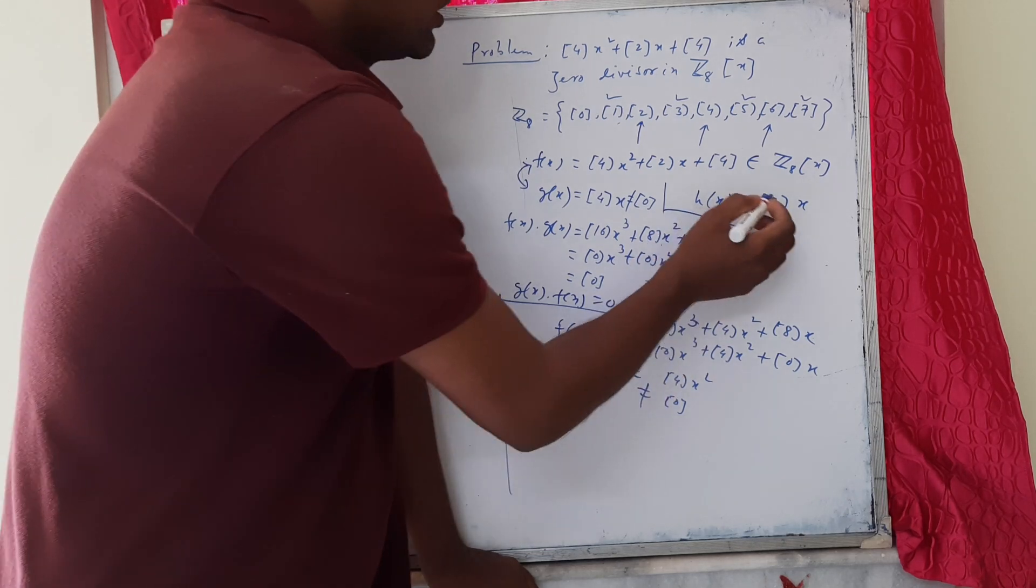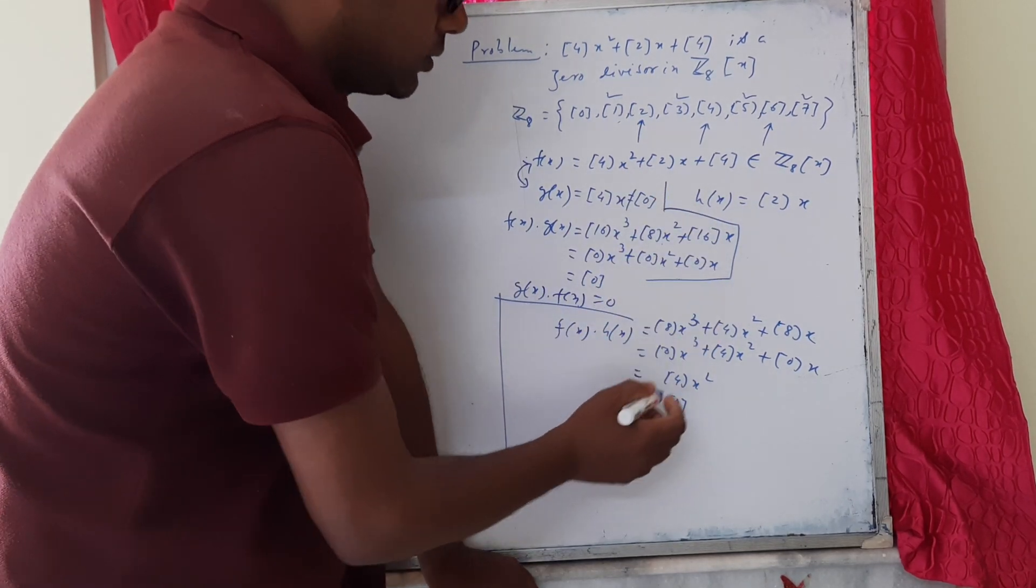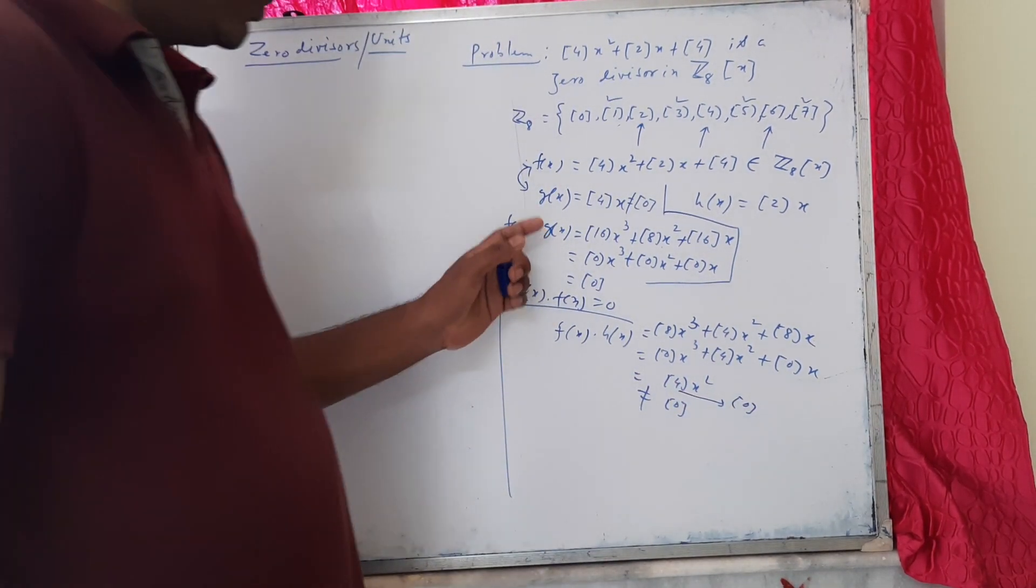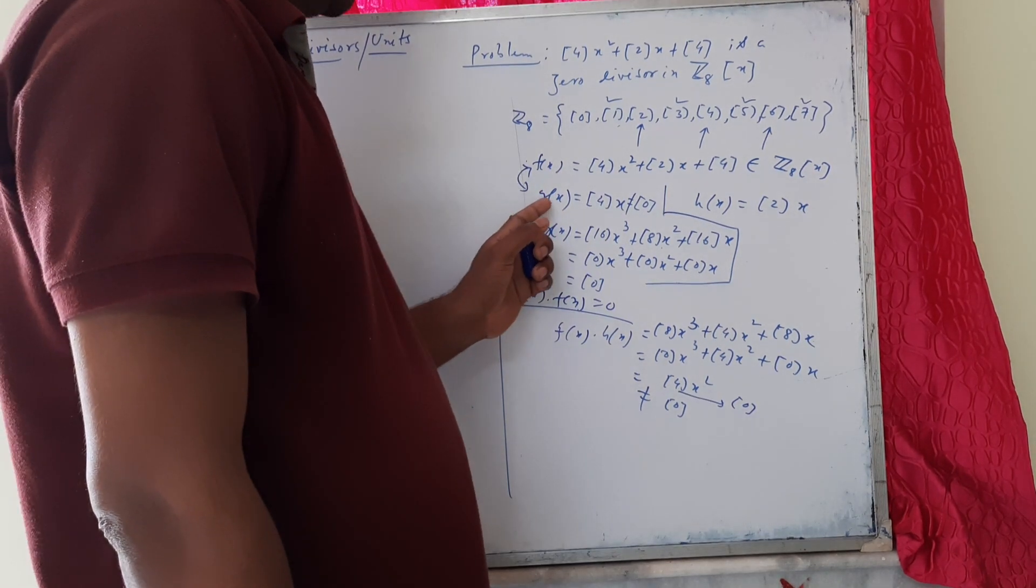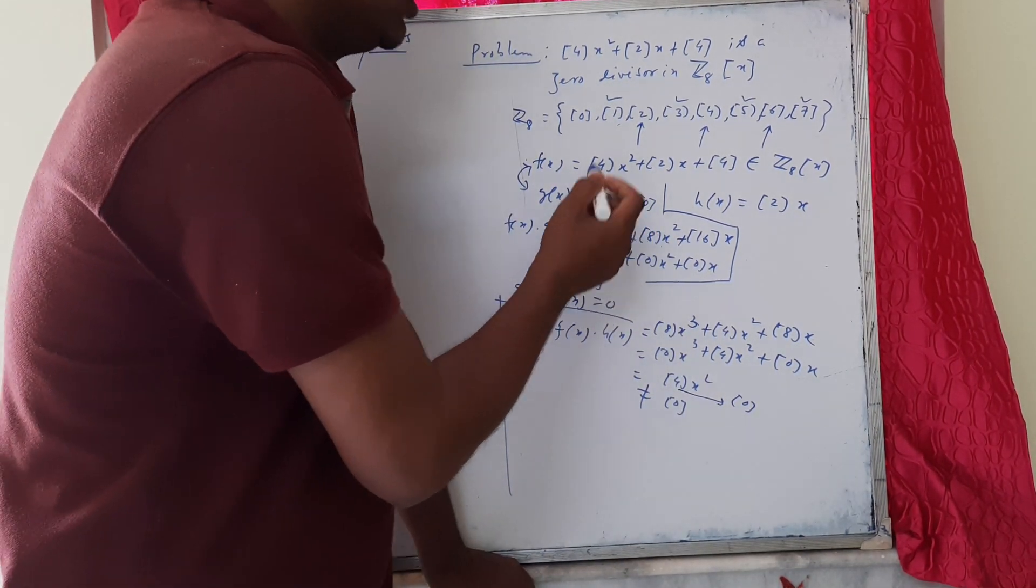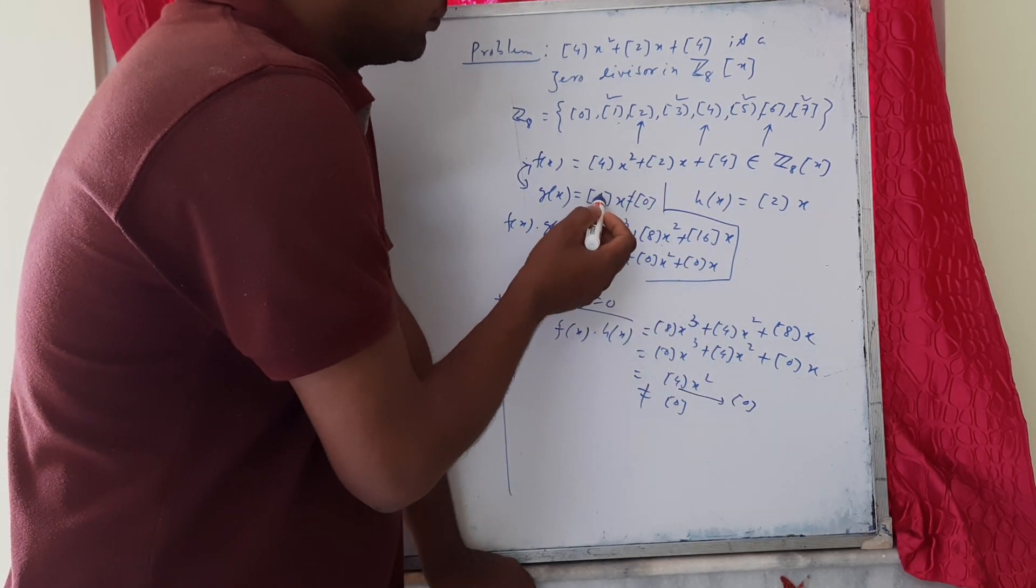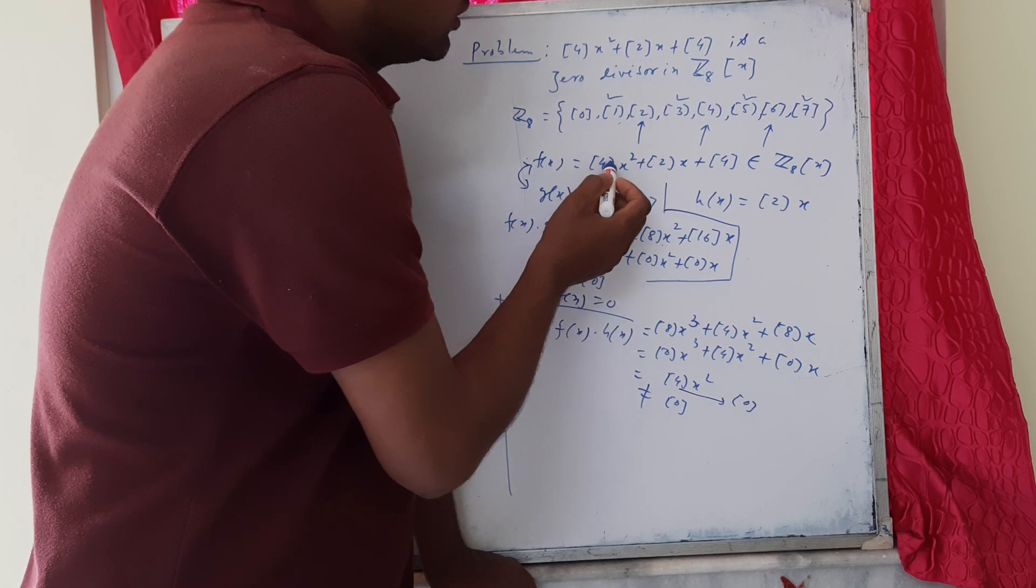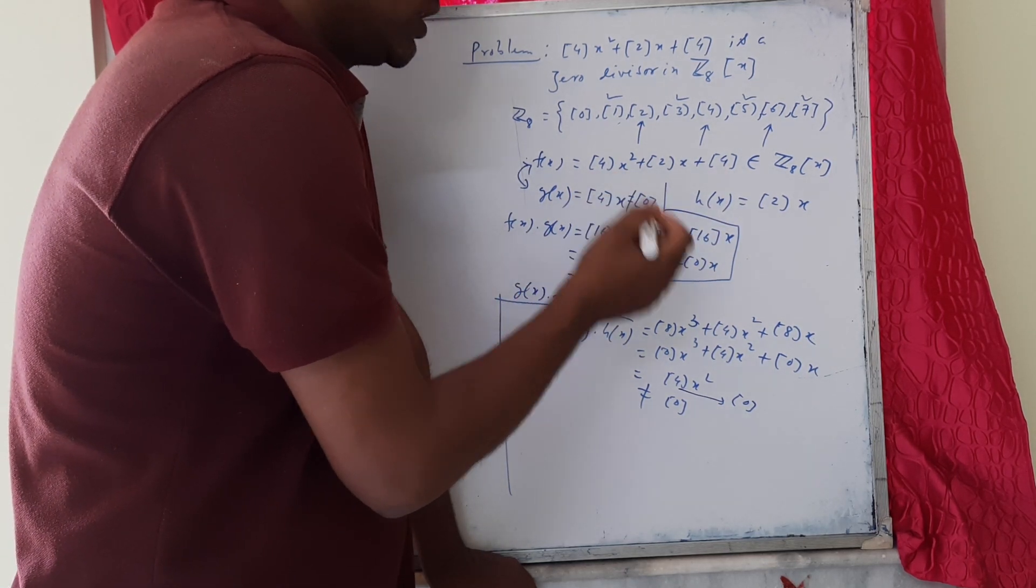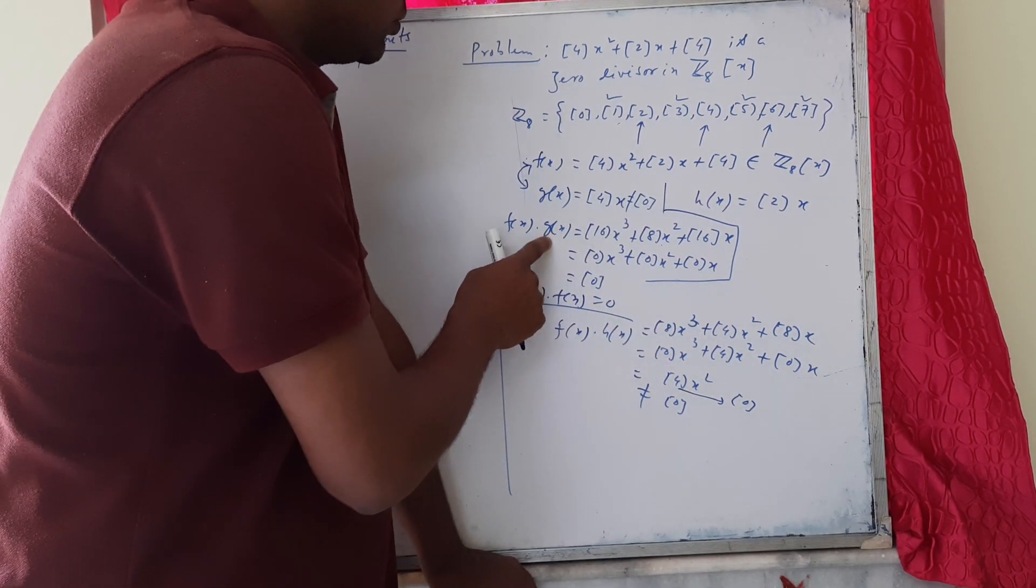Because class 2 times class 2 gives class 4, which is not 0. We have to choose g(x) in such a way that its coefficients are zero divisors, and if we multiply this coefficient with the given coefficients, we should get the zero coefficient. Only then will g(x) work.